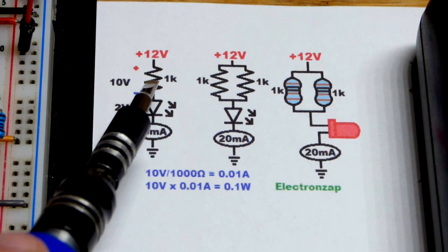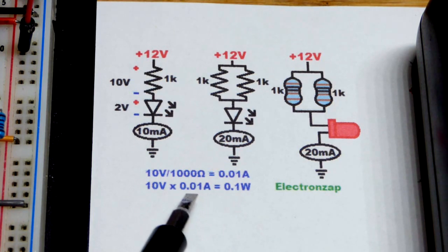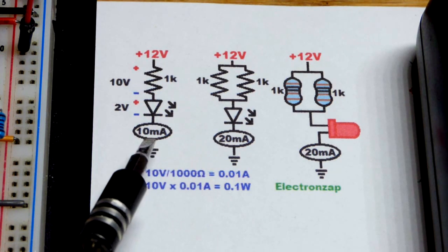They're rated generally for 0.25 watts, so that's well below that, but you should still keep it below 0.125 watts, that's recommended. So this is right below the recommended wattage to keep a resistor at.